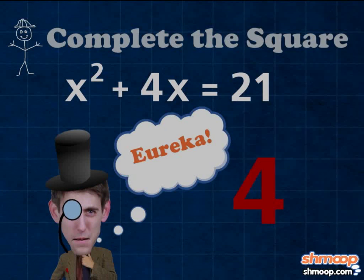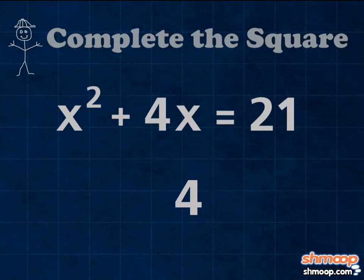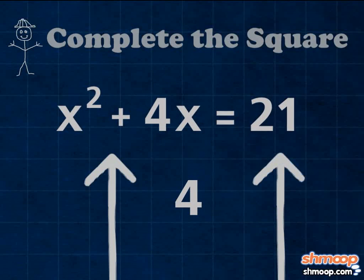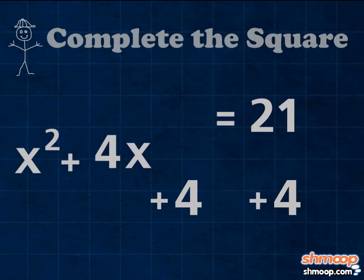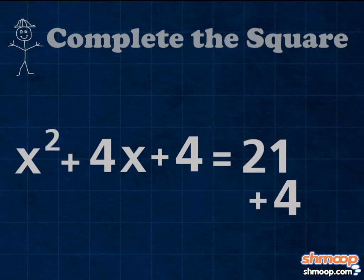Eureka! We've found the number that completes the square. Whatever we do to one side, we have to do to the other. So we add 4 to both sides, which gets us x squared plus 4x plus 4 equals 21 plus 4.